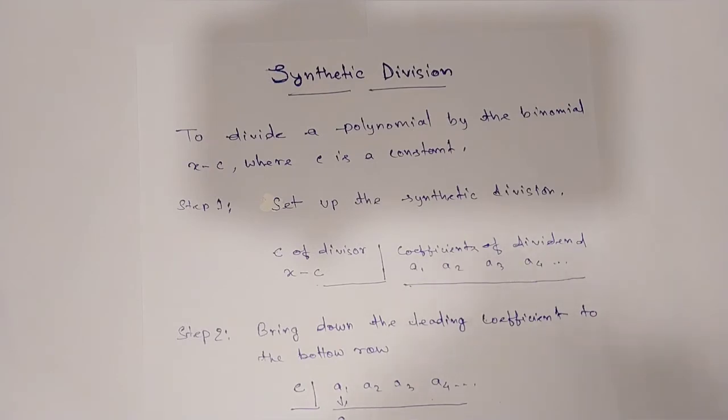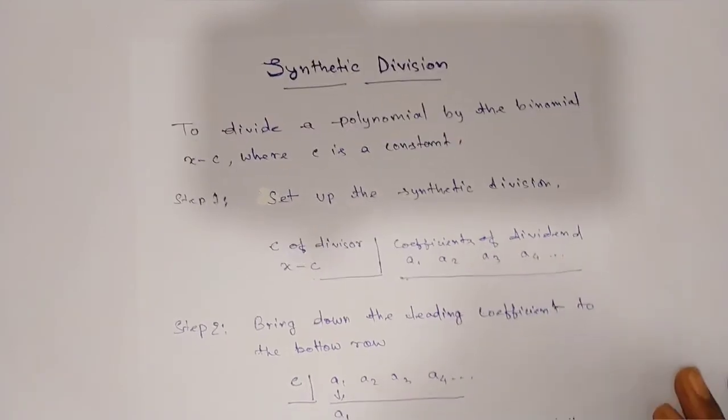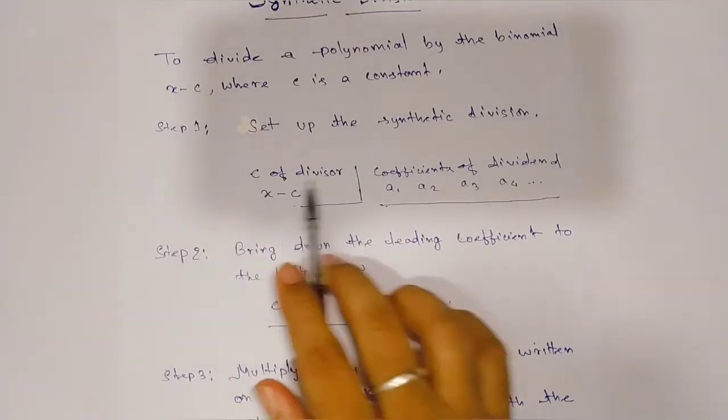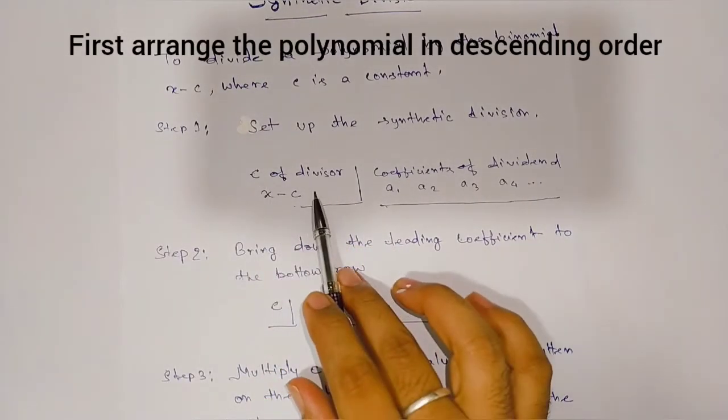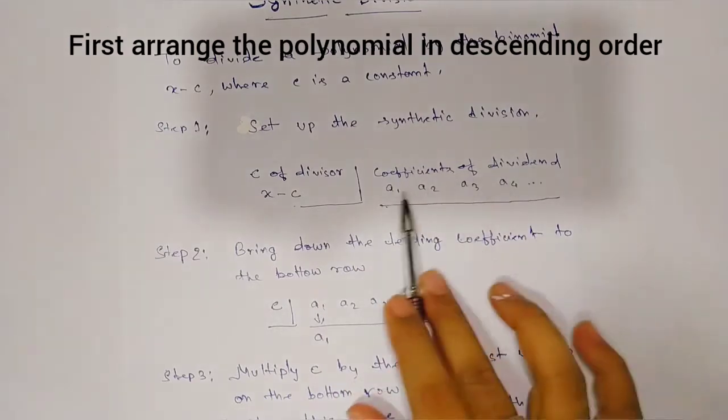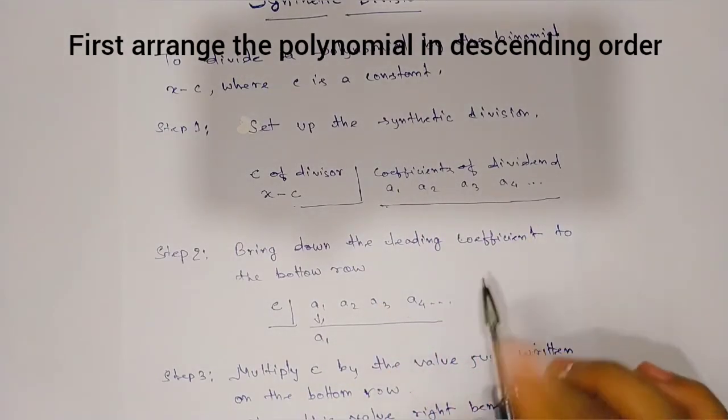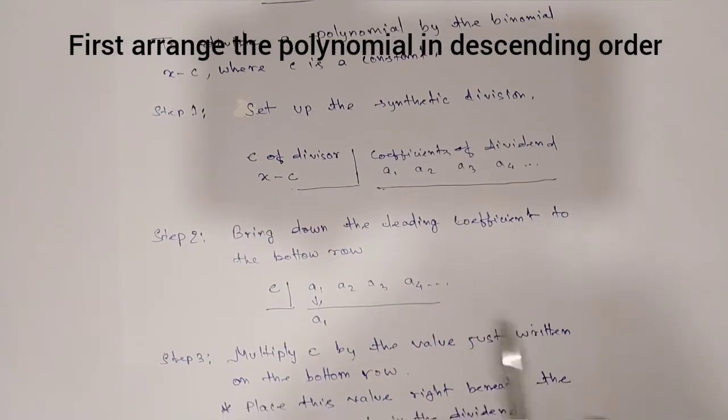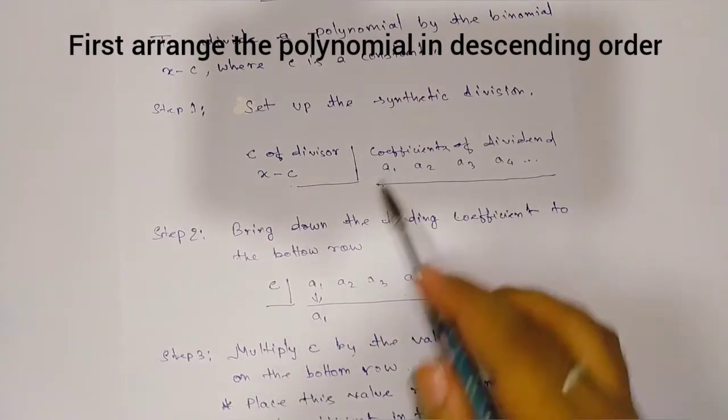First step: set up the synthetic division. Take C from the divisor and write the coefficients of the dividend. Bring down the leading coefficient.